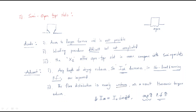Second advantage: the flux distribution is nearly uniform. In the open type slot that is not uniform, but here the flux distribution is almost approximately the same. As a result, harmonic torque — which is unwanted torque — is reduced. So with semi-open type slots the advantages are: magnetizing current is reduced, power factors are improved, flux distribution is uniform, and harmonic torque is reduced. The disadvantages are: larger former coil is not possible, winding procedure is somewhat difficult, and maximum torque is less compared with open type slots.